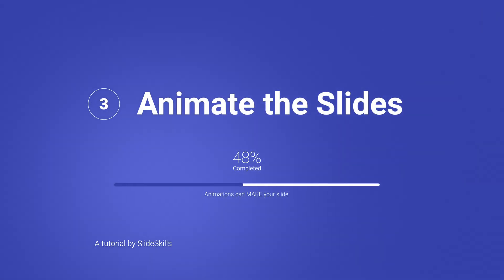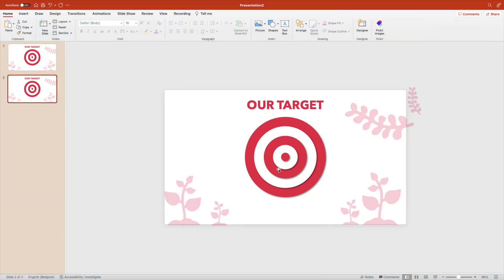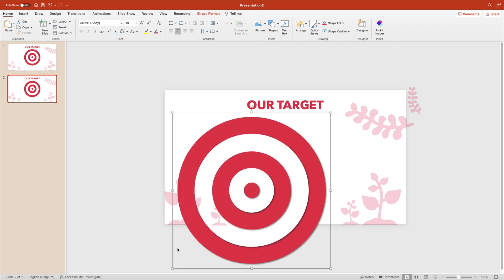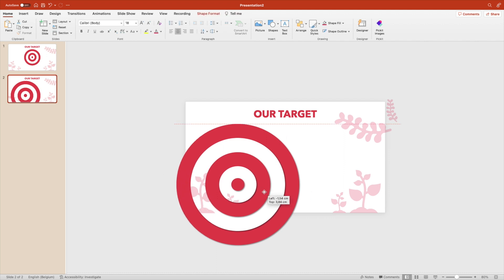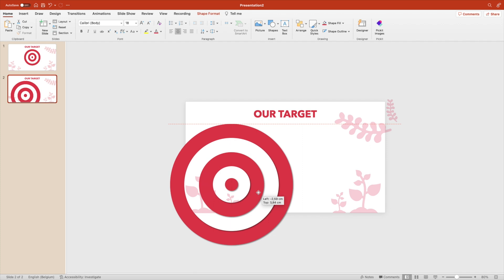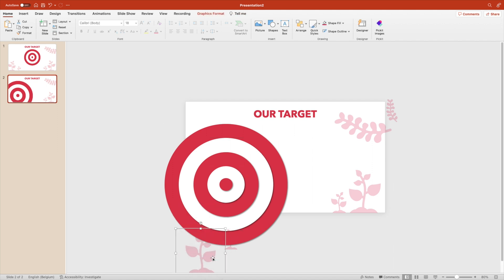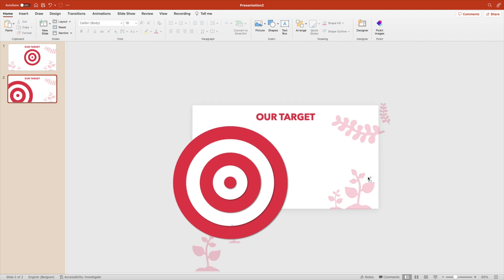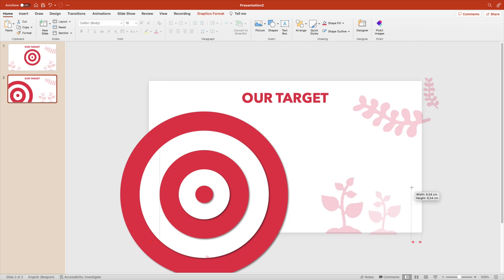Step three is animating the slide — animations can really make your slide. Right-click and duplicate the slide. On the duplicate, increase the size of the target by quite a lot and position it to the left, creating a zoomed-in version. Drag the icons off-screen in different steps so they fly in at different speeds. You can also grow or shrink the plants as you wish.